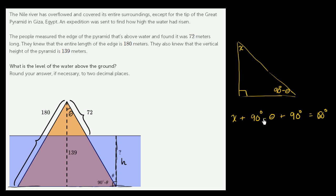If we subtract 180 from both sides, we get x minus theta is equal to 0, or if you add theta to both sides, x is equal to theta.